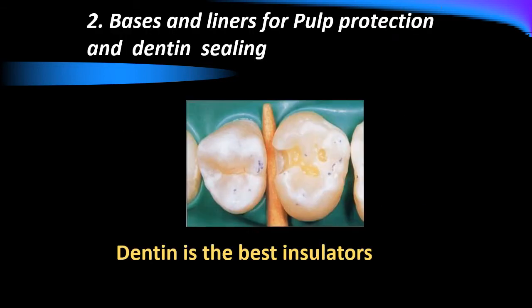The second use for dental cement is bases and liners, whose main function is pulp protection and dentine sealing. If a patient comes with caries, we remove the caries and the enamel, exposing the dentine. Dentine is very sensitive to heat, cold, and even air. So we must place a layer over the dentine to cover it and prevent any stimuli from reaching the pulp. In a sound tooth, we do not feel this pain because dentine is a good insulator; if we remove a layer of dentine, it becomes sensitive.